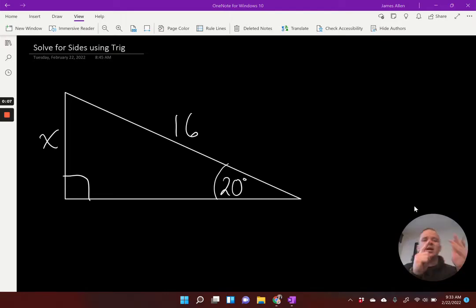Right? This is not a 30, 60, 90. This is not a 45, 45, 90 triangle. It's a 20 degree angle here, right? But it's still a right triangle. So we can use trig with an angle and a known side, two pieces of information, to find a missing side.